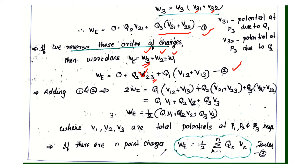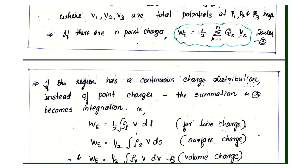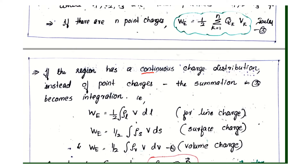For n point charges, the energy is given by the summation from k equals 1 to n of Qk·Vk, multiplied by one-half. For continuous charge distributions, the summation becomes an integration. Therefore, WE equals one-half times the integral of charge density rho-L into V dL.